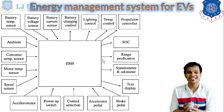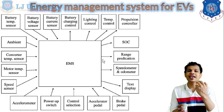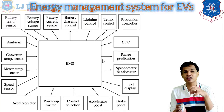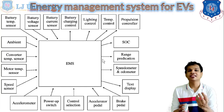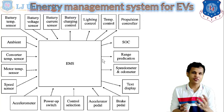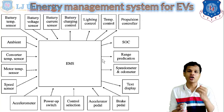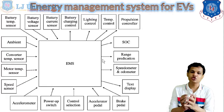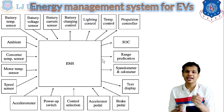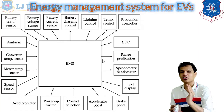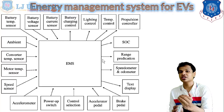The outputs of the Energy Management System include: first, battery charging control — the charging must be controlled, otherwise the battery will get overcharged, which can damage the battery, reduce voltage, and reduce capacity. So charging is applied only when required. Next, lighting control manages interior and exterior vehicle lighting. Temperature control is performed based on inputs from the various temperature sensors. The propulsion controller controls the motor speed as required for the vehicle.